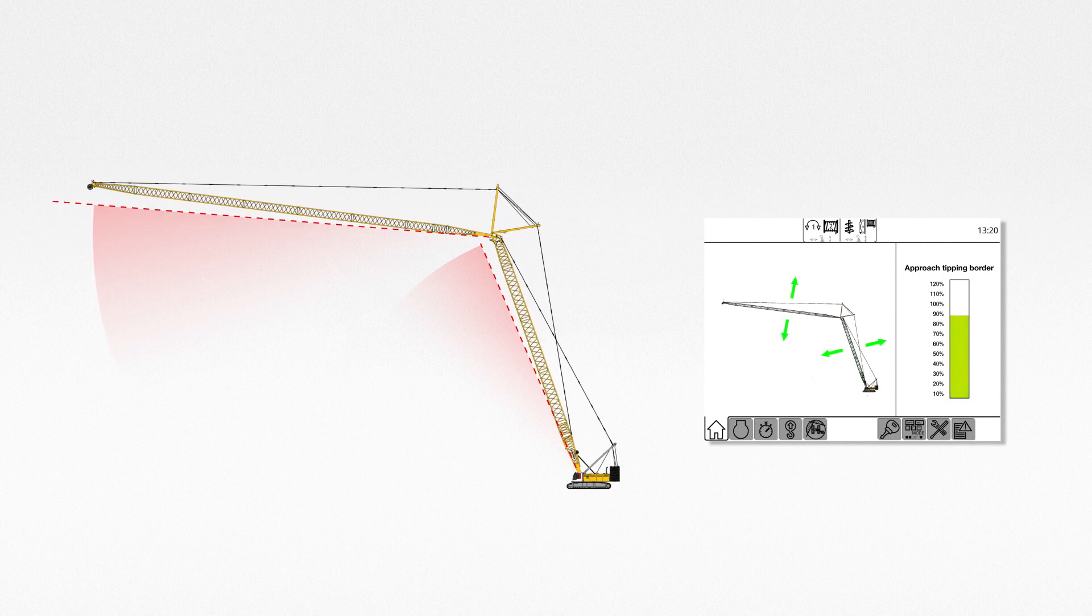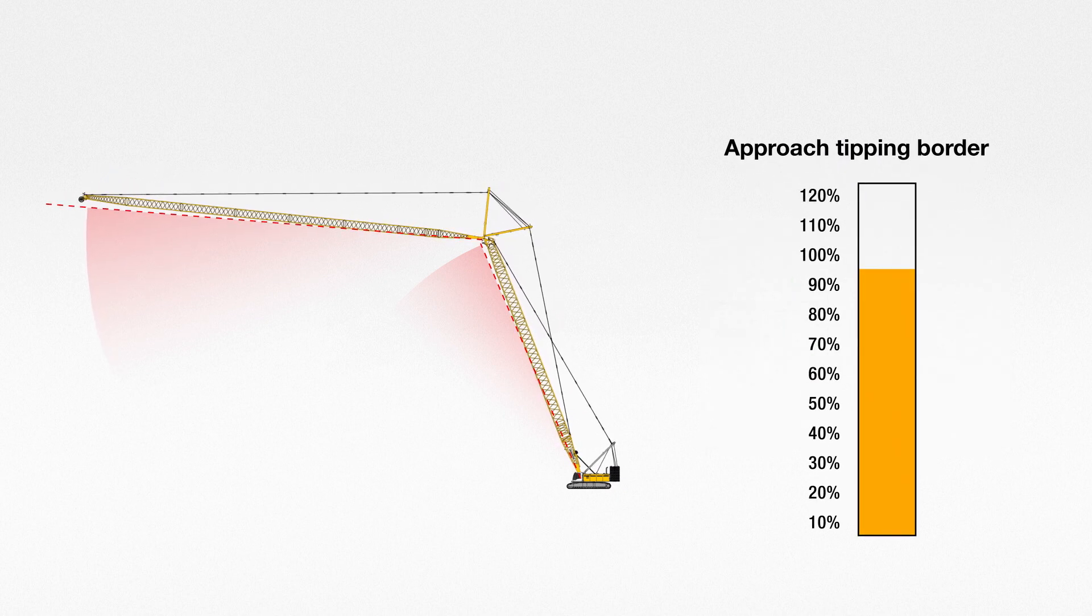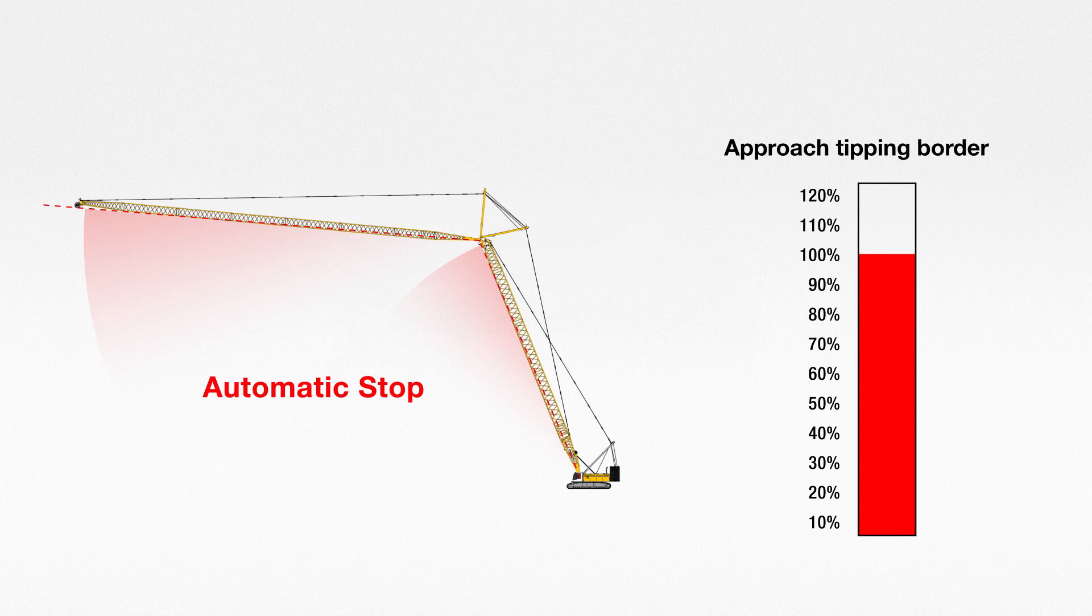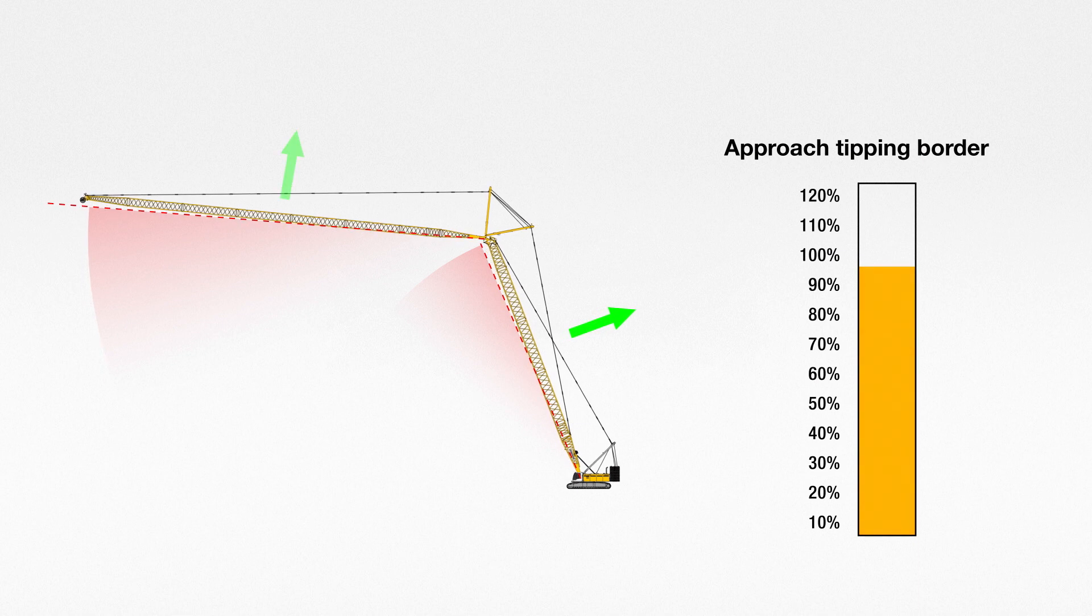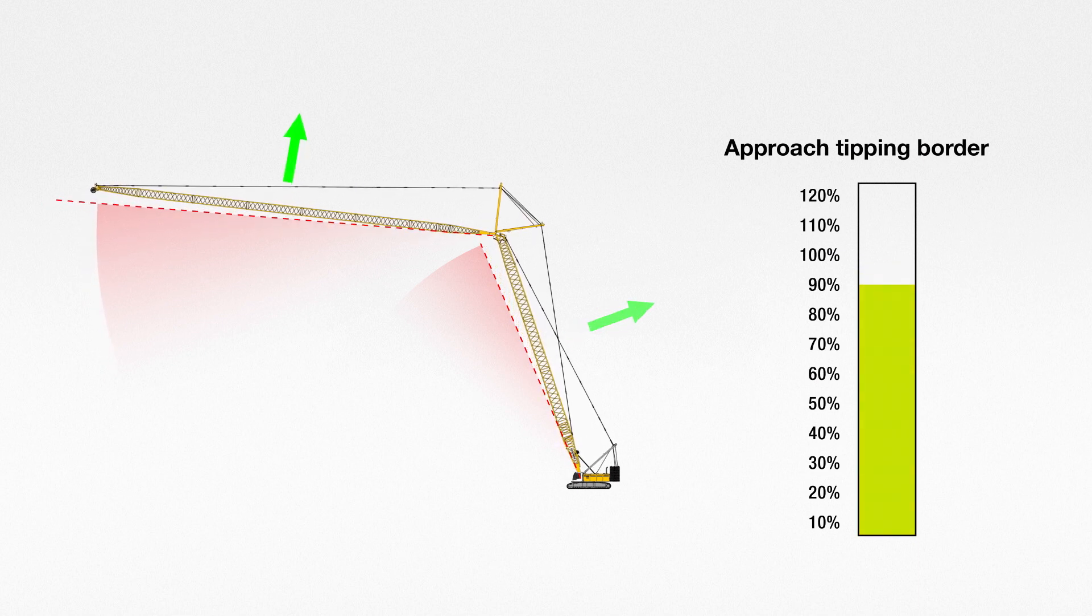Our boom up and down aid indicates the approach to the tipping line and automatically stops the movement before entering an unsafe zone. To continue, you have to bring the crane back into a safe position.